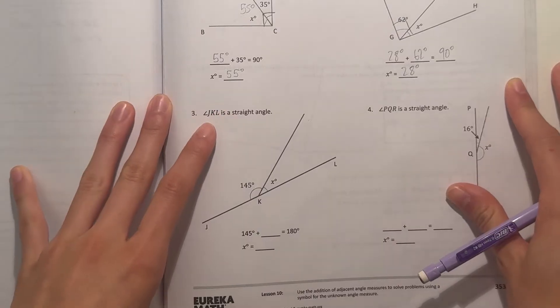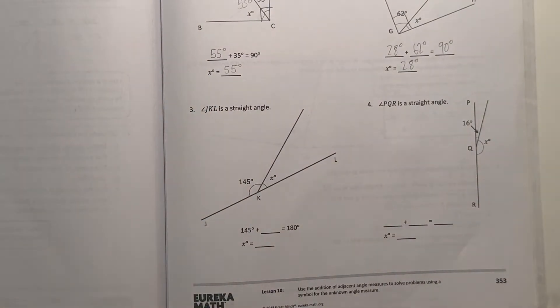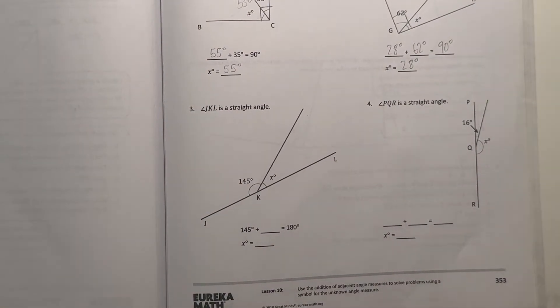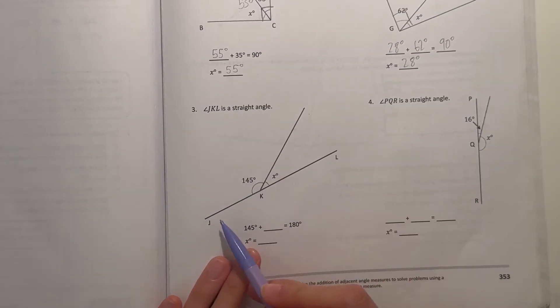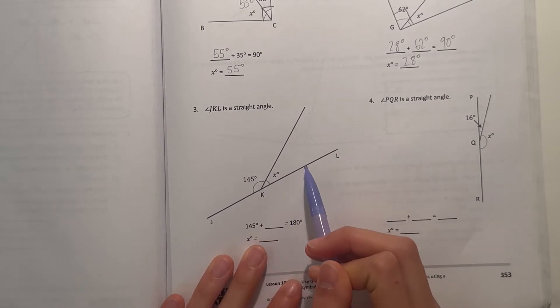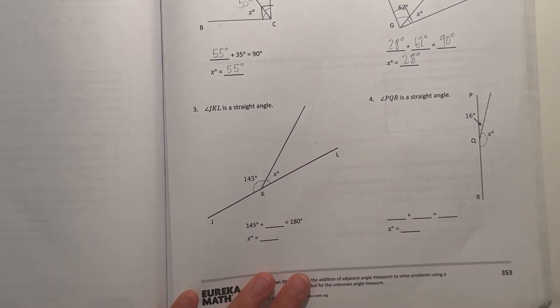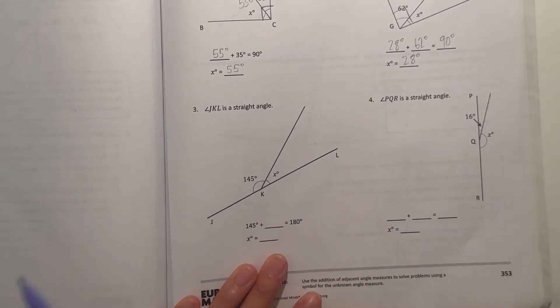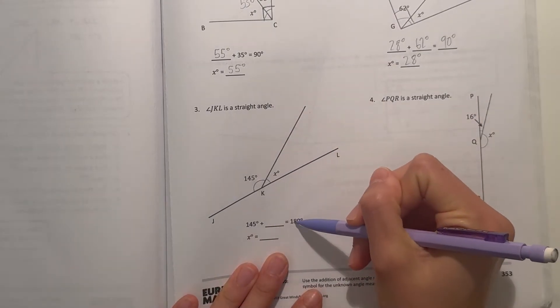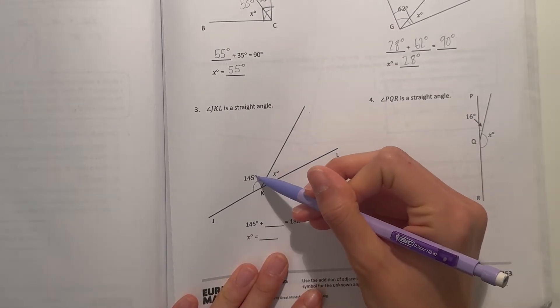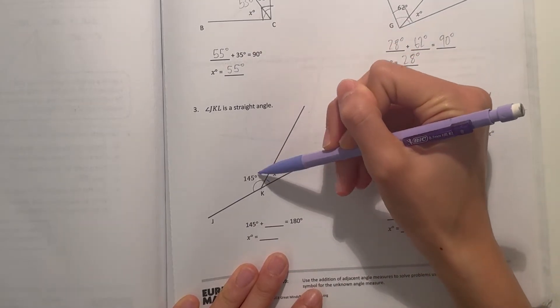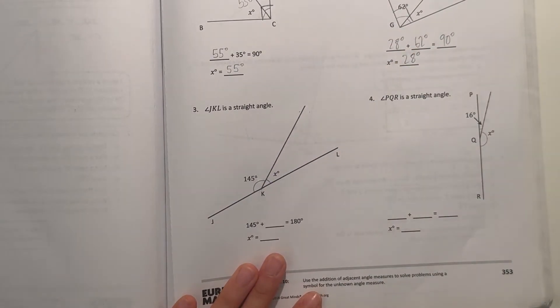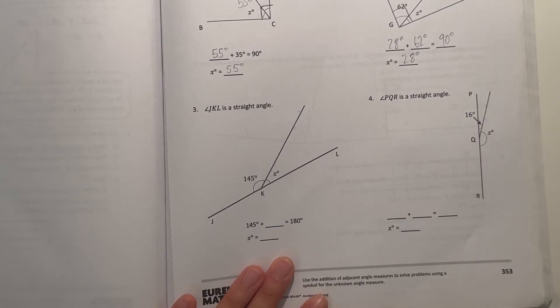All right, number three. Angle JKL is a straight angle. All right, so a straight angle JKL is just a flat line, and when we have a line it's automatically 180 degrees when it's just a plain line. So to find that we need to do 145. That's how much this measures. This makes sense because this is an obtuse angle, so it's more than a right angle, which means it's more than 90 degrees.